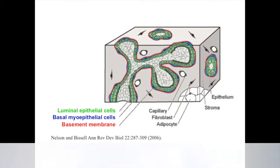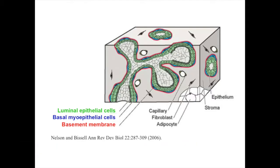Using the mammary gland as an example, tissues are typically made up of multiple cell types. As shown in this picture, the milk duct includes luminal epithelial cells, which respond to female hormones, and myoepithelial cells that express smooth muscle contractile proteins. During lactation, the luminal epithelial cells produce milk, and the myoepithelial cells aid in milk release.